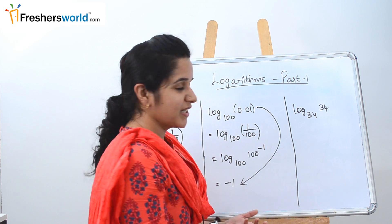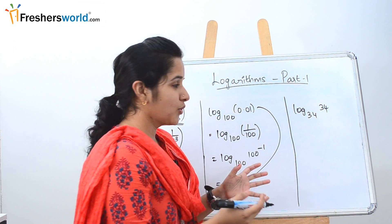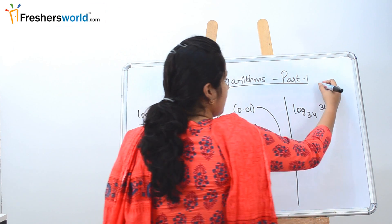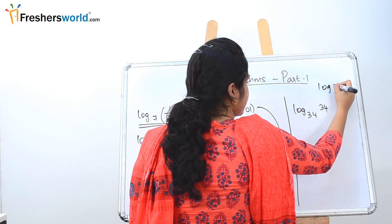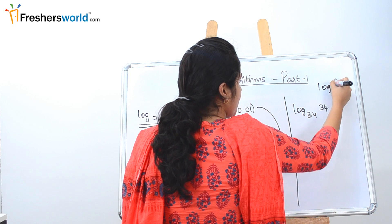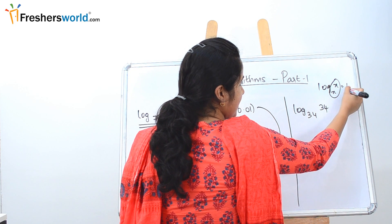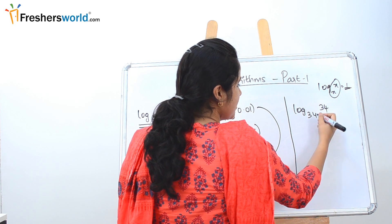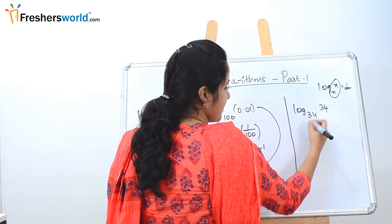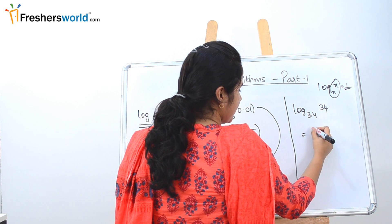The next sum is a direct one. As you know, log_x(x) = 1 — when both the base and the argument are the same, the value equals 1. Both values are the same here, so the answer is 1.